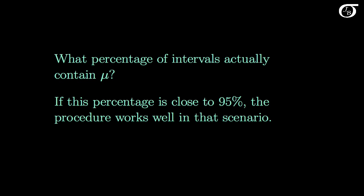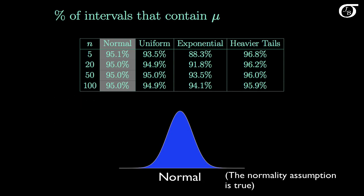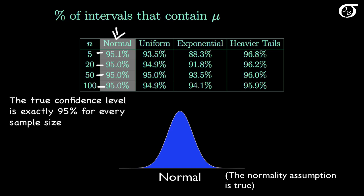If the percentage is quite different from 95%, the procedure is not working very well. In this simulation I've simulated values from the normal distribution, so the normality assumption is perfectly justified. We can see that we get 95.1% and 95.0% across different sample sizes. The only reason those don't equal exactly 95% is due to sampling variability, but theoretically those percentages are exactly 95%.